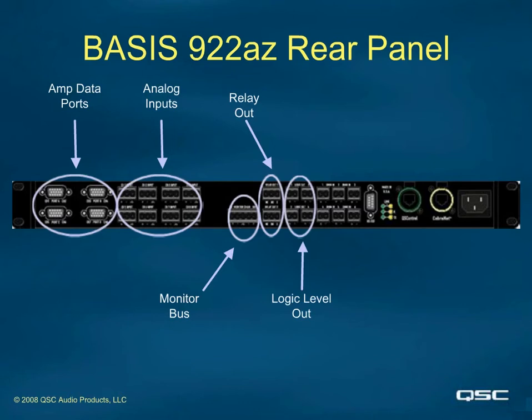There are logic level outputs available on most Basis devices. These are four TTL compatible outputs — essentially 0 volts off, 5 volt on type signals. Use them like the relay outputs to control other external equipment that can use such signals. The various states of these logic outputs, and also the relay outputs, can be stored as part of the snapshots for future recall of those states.